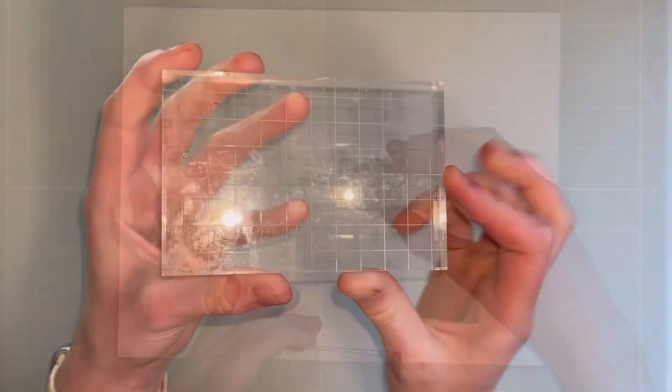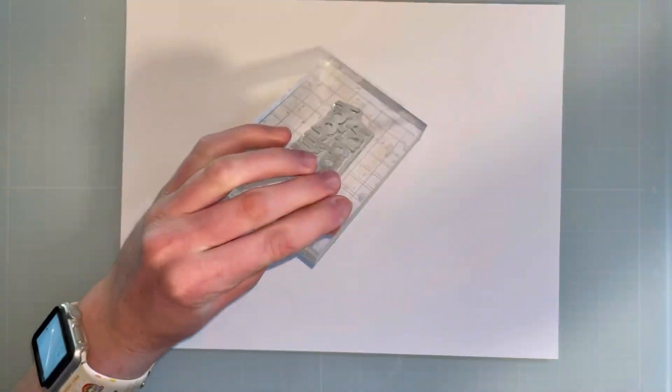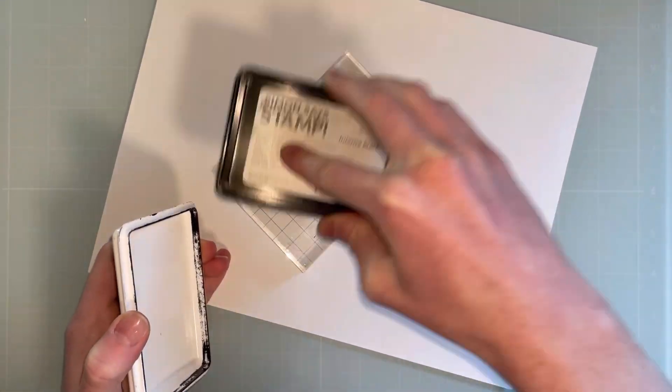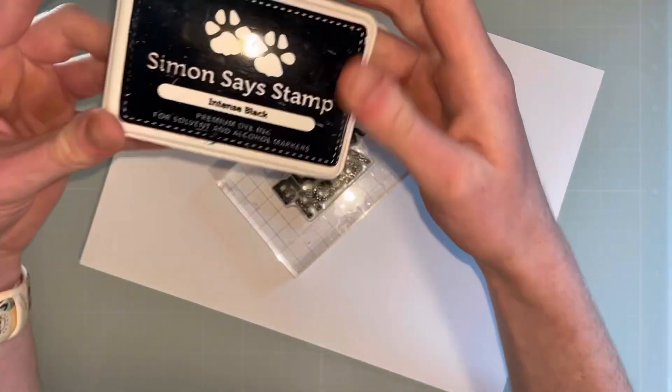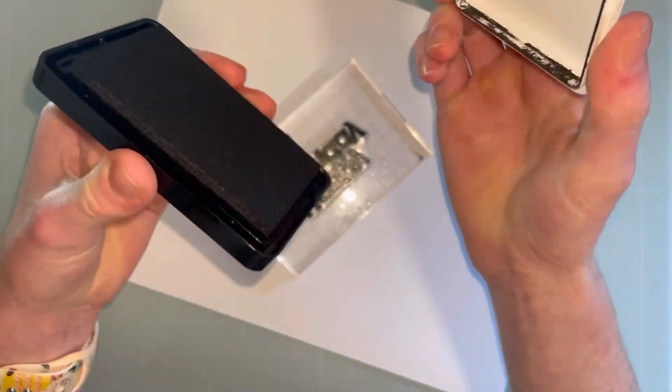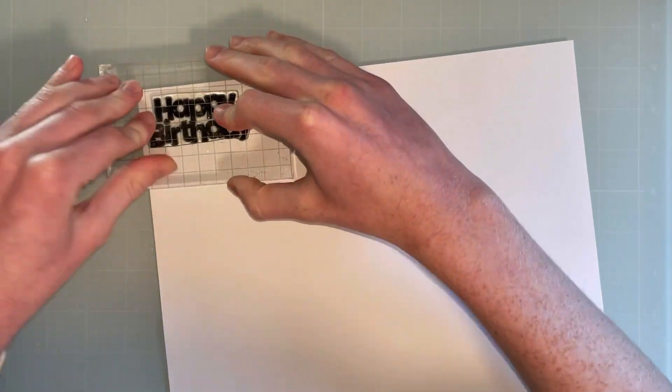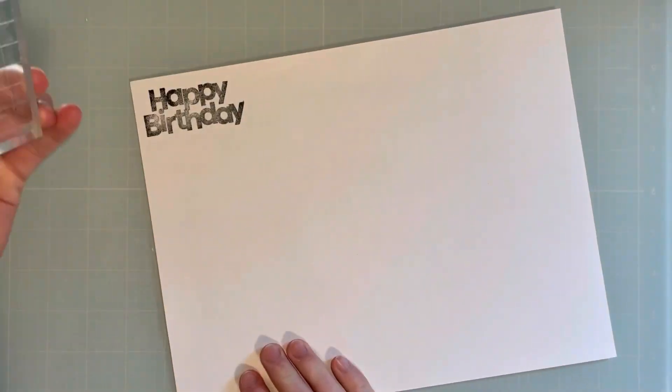So the first thing that is great for stamping are acrylic blocks. They come in all different sizes and are the most inexpensive stamping tool you can get. Acrylic blocks are really great for beginner stampers or more advanced stampers. I think they're just a great tool for anybody in the craft room to have.